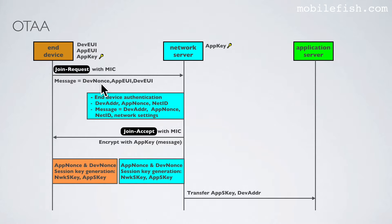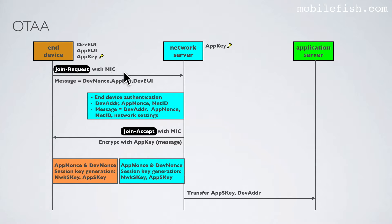The network server authenticates the ANT device with the message integrity code value. Because it has received the DevNonce, AppEUI, and DevEUI, over this message it will use its own AppKey — which must be the same as the device's AppKey — and calculates its own message integrity code. If both message integrity codes are the same, then this ANT device is authenticated.